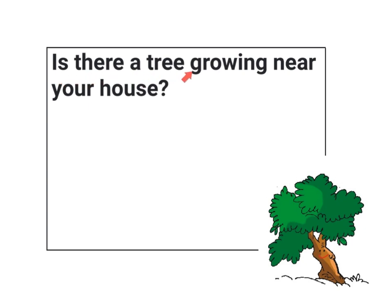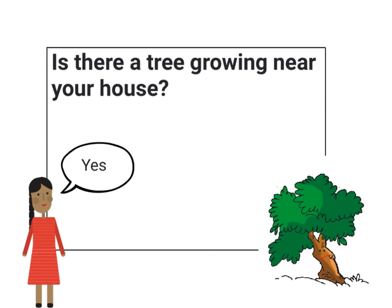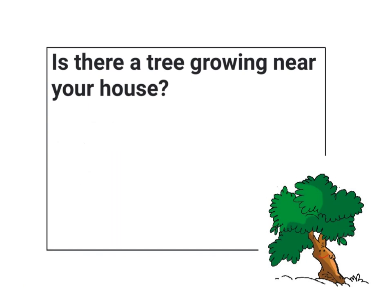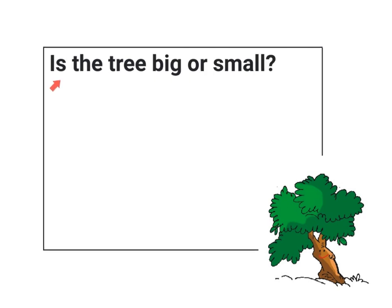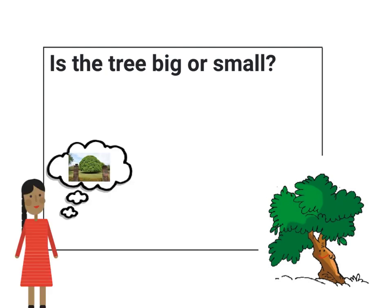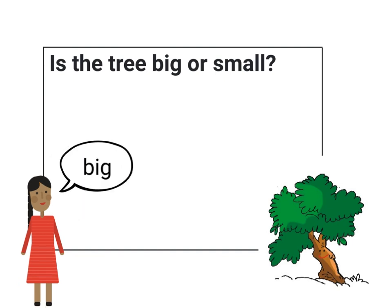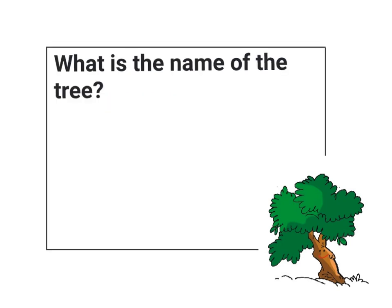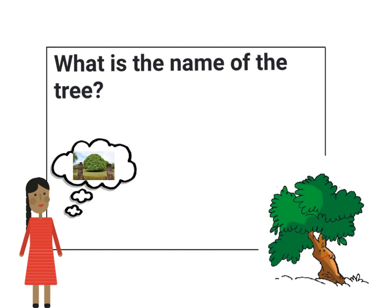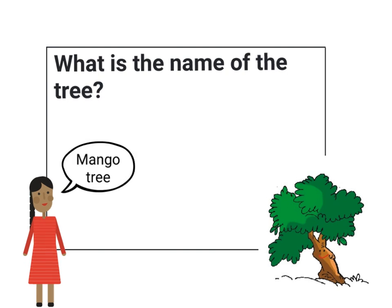The next question is: is there a tree growing near your house? The answer is not in the book, so I will have to think. Yes, there is a tree near my house, so I will write: 'Yes, there is a tree growing near my house.' The next question is: is the tree big or small? The tree near my house is big. The next question is: what is the name of the tree? The name of the tree near my house is a mango tree.